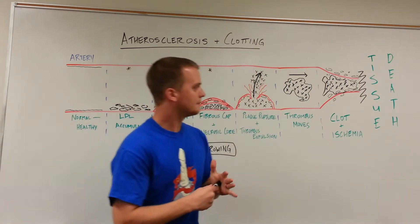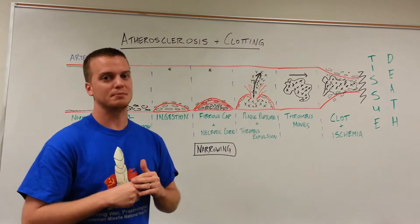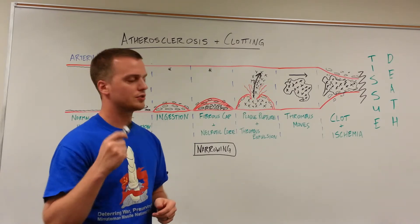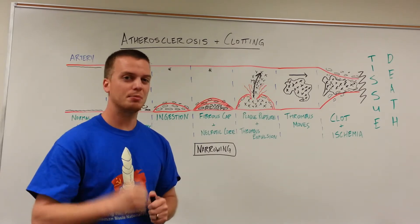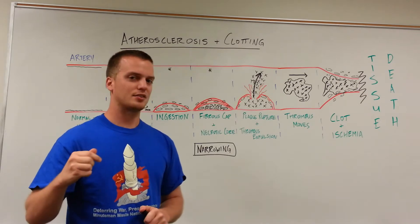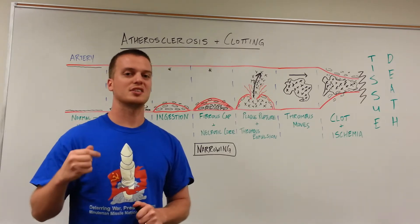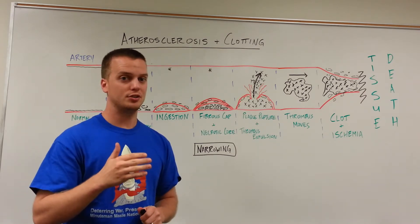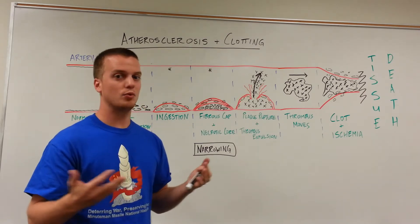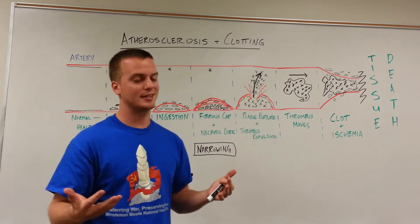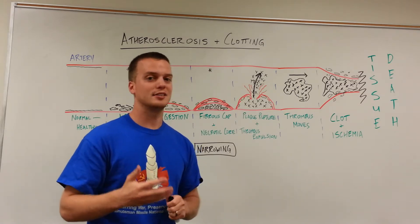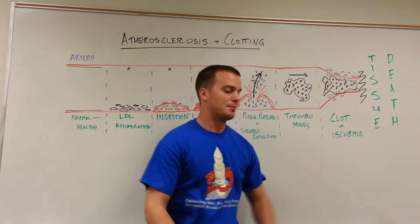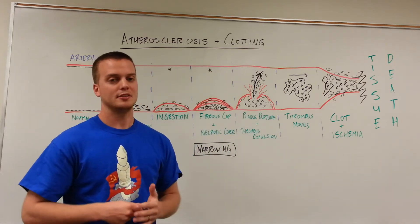A common manifestation of this is myocardial infarction, or a heart attack. What happens is in one of those coronary arteries — which are very small compared to the aorta — one of those plaques, thrombi, or clots gets lodged in there and blocks all the downstream heart tissue from receiving any more oxygen. Because the heart requires so much oxygen, it's then going to die. And that's when you're going to have tissue death and the possibility of the patient's death.